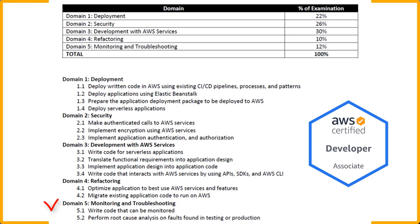Domain five is Monitoring and Troubleshooting. You need to know how to write code that can be monitored and perform root cause analysis on faults found in both testing environments and production environments.